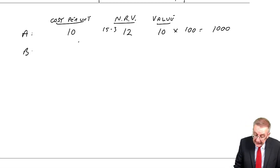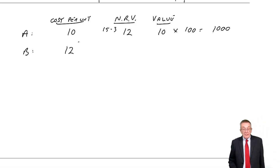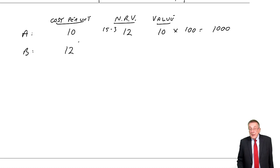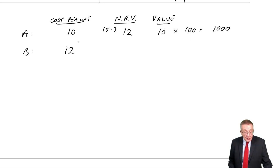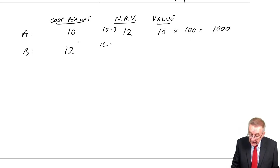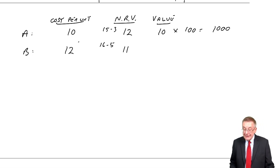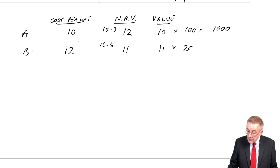What about B? So far, they've cost us $12. We're going to spend an extra $5, not spent yet, and then sell them for $16. So, the net realizable value is 16 minus 5, which is 11. We have to value at the lower of the two, which would be 11. And how many units are there? 200. So that's $2,200.